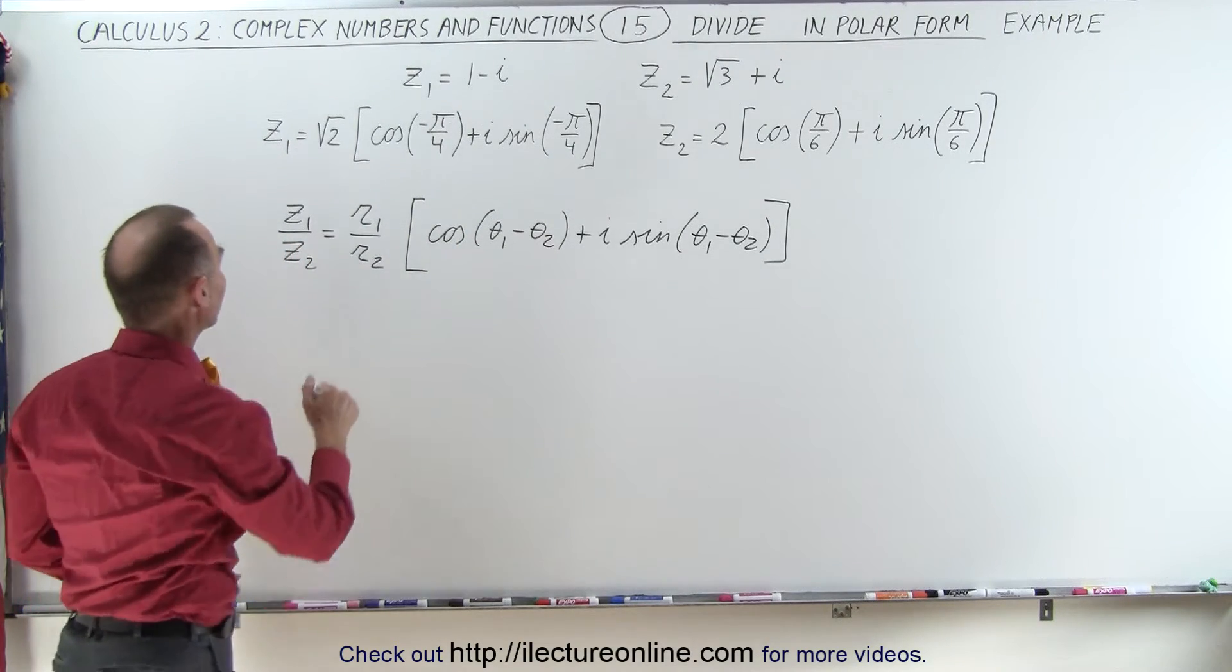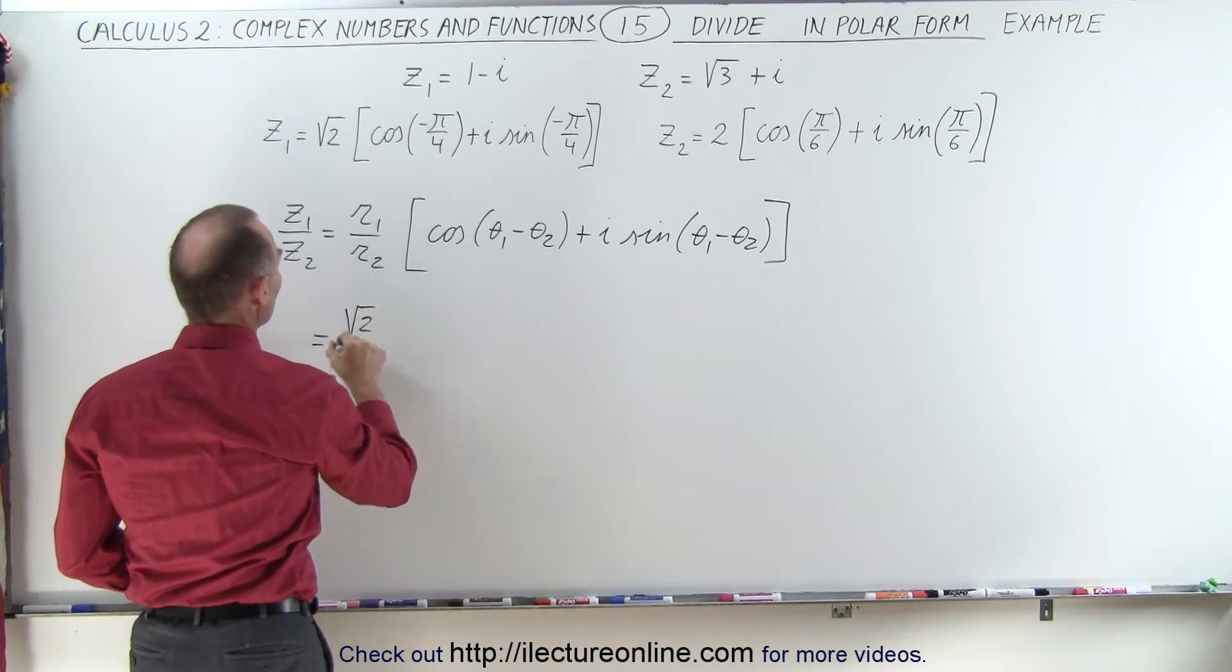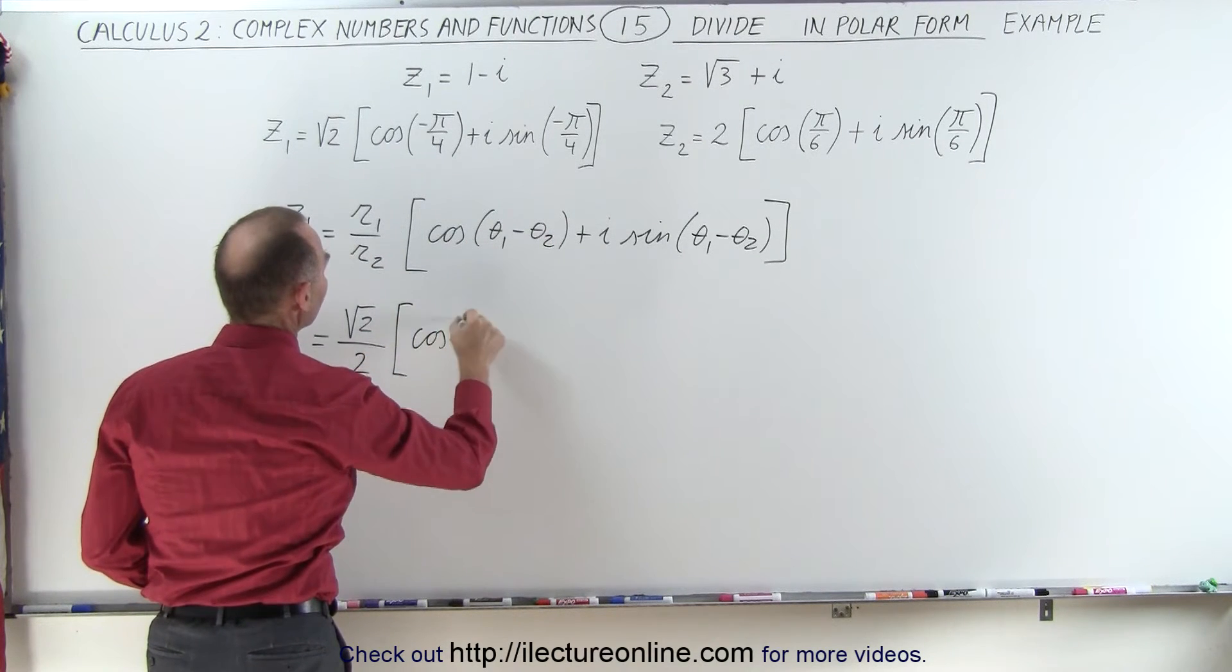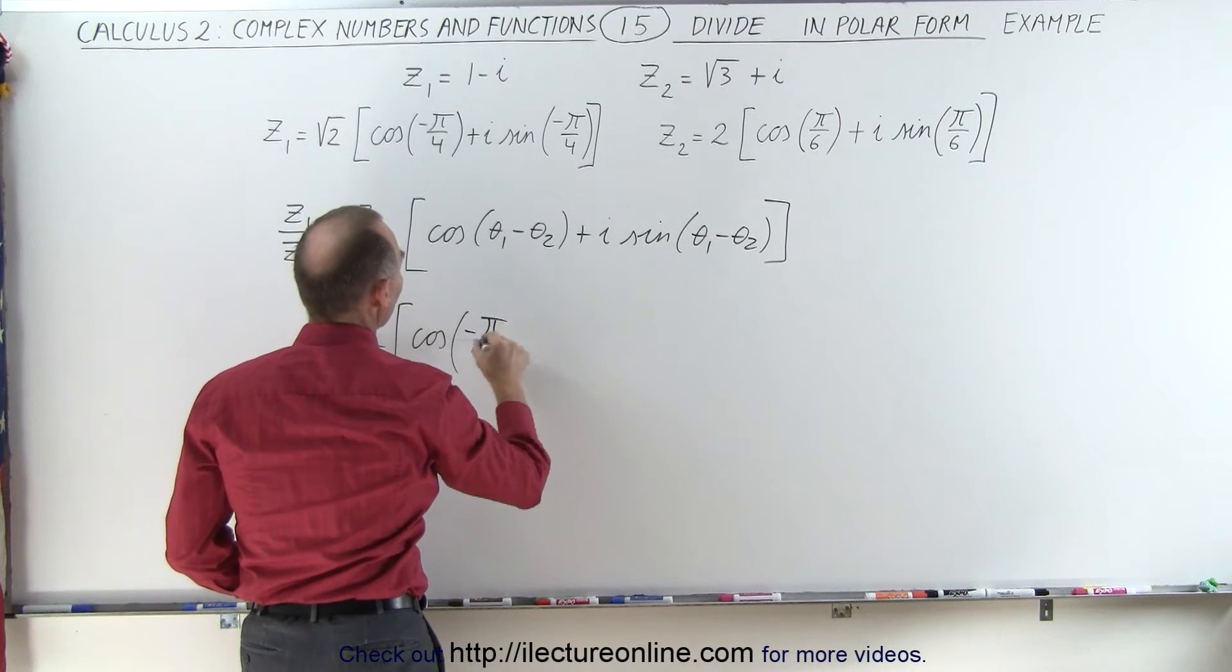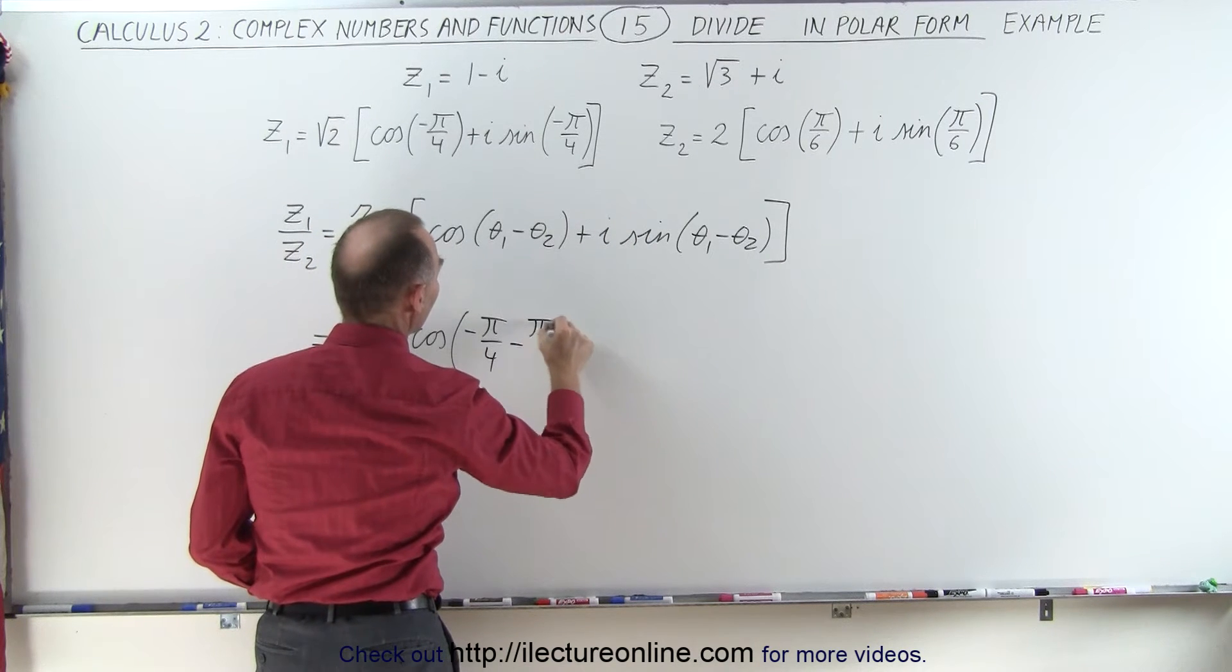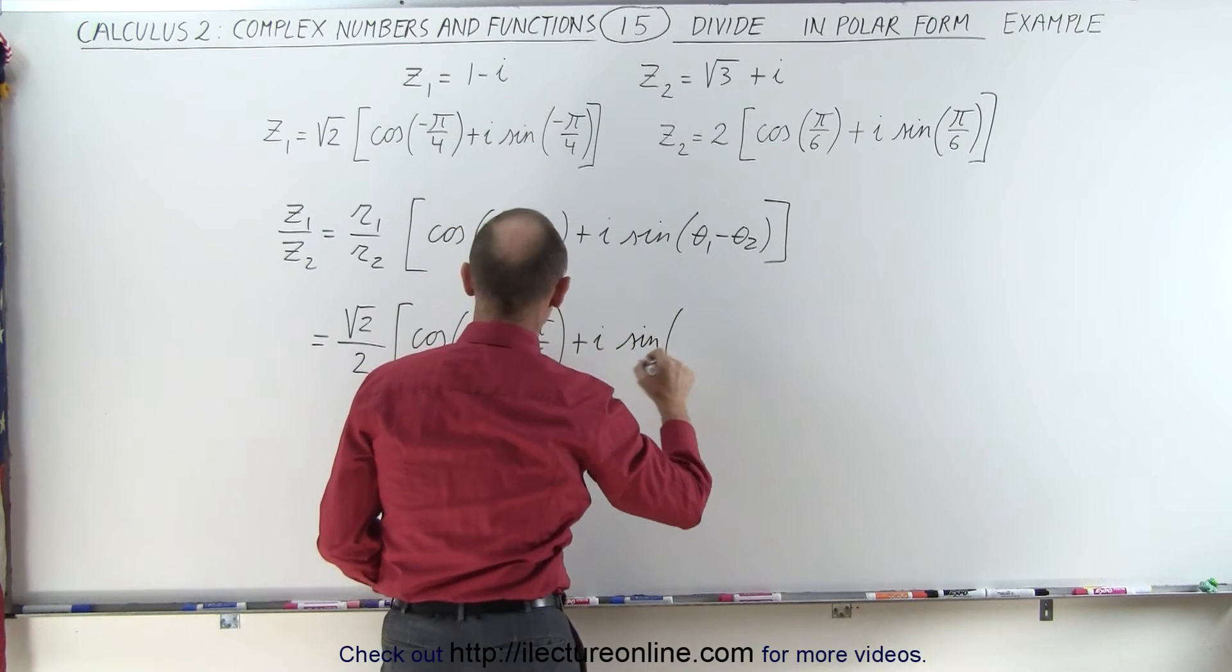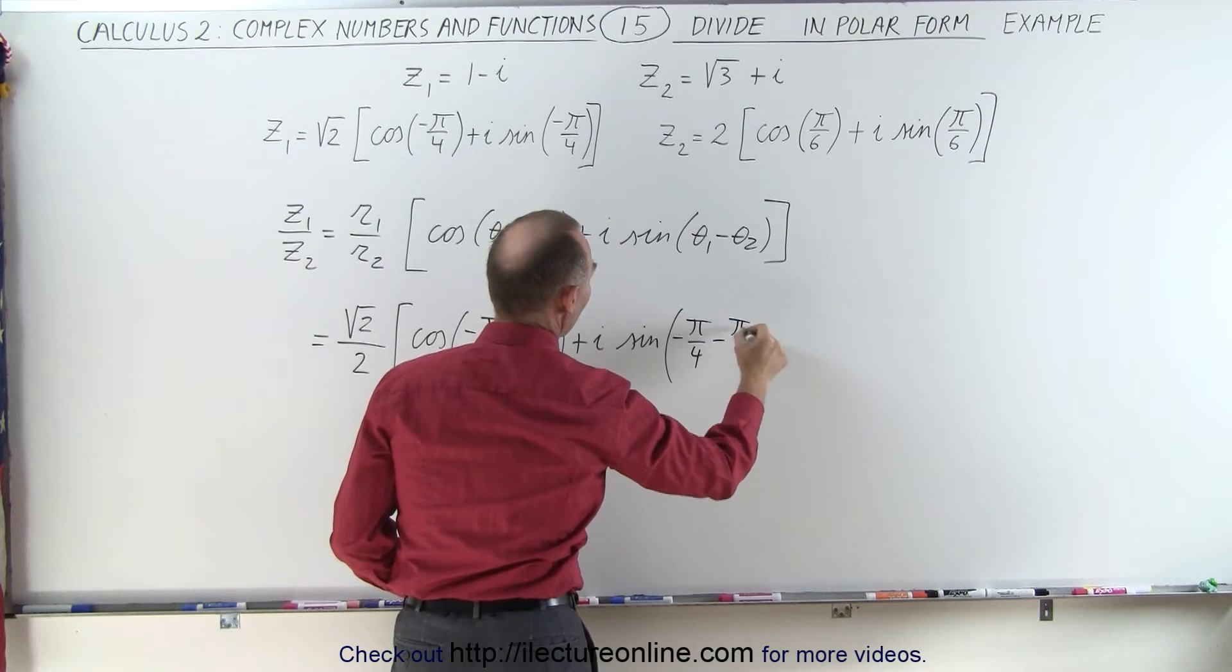Now we can simply plug this in. This equals R1, which is the square root of 2, divided by R2, which is 2, times the cosine of theta1, which is minus pi over 4, minus theta2, which is pi over 6, plus i times the sine. We get the same argument here: minus pi over 4 minus pi over 6.